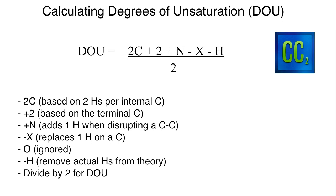This is going to set up those parameters. So let's say you only have one degree of unsaturation, and a benzene ring requires four degrees of unsaturation. If you get to your NMR and you only have one degree of unsaturation but you think your NMR is telling you that you have an aromatic ring, you can be sure that that's incorrect — you either calculated the degrees of unsaturation wrong or you're not reading the NMR correctly. So what we're going to do here is take a look at how we calculate degrees of unsaturation.